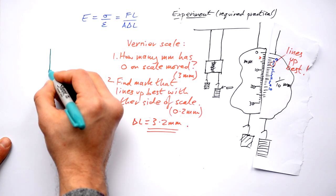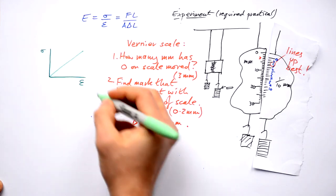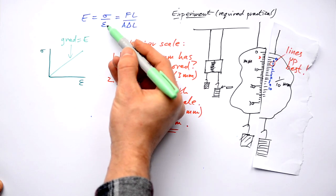So what could we do? Well, we could draw a graph of stress against strain. And that would give us a nice straight line. And the gradient of that is going to be our Young's modulus. We can see that from the equation.